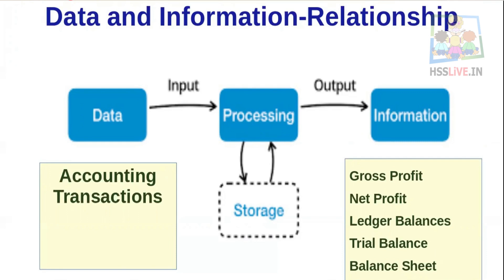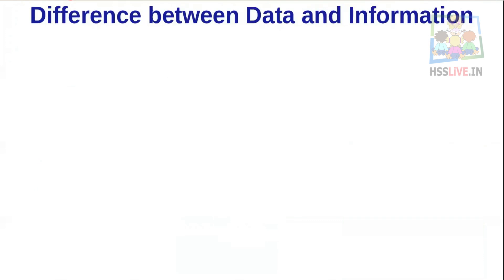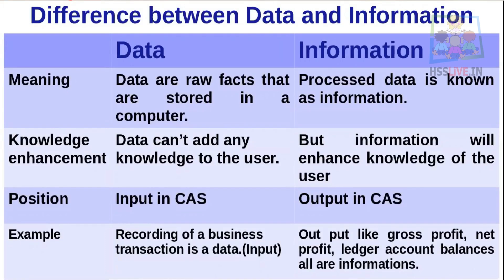Difference between Data and Information: First — Meaning: Data are raw facts stored in a computer; they are not processed. When we process the data, it is known as information. Data is the raw unprocessed form; information is the meaningful processed result. Second — Knowledge Enhancement: Data cannot add any knowledge to the user, but information will enhance the knowledge of the user.